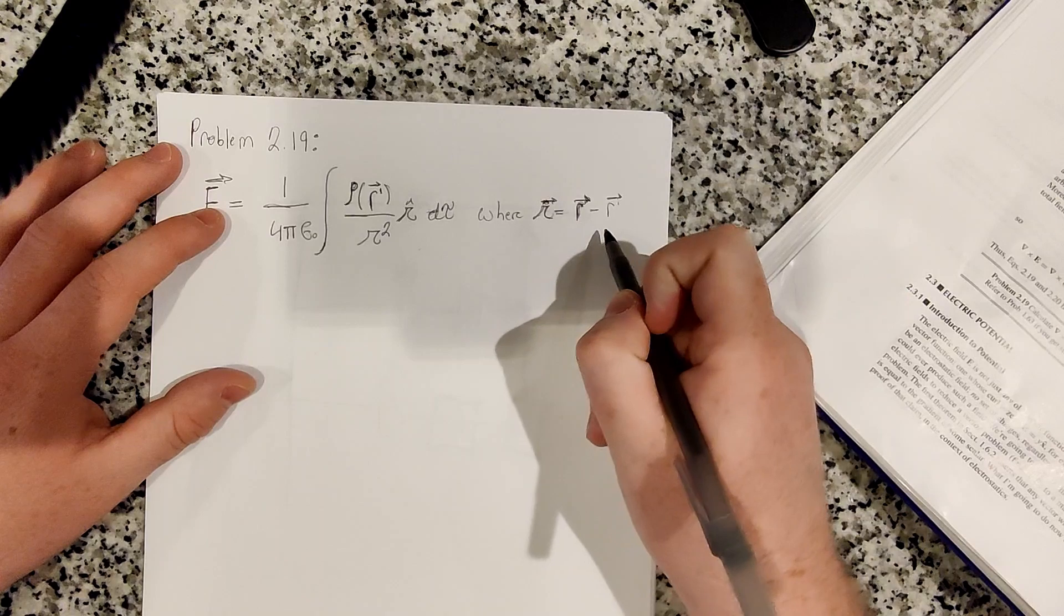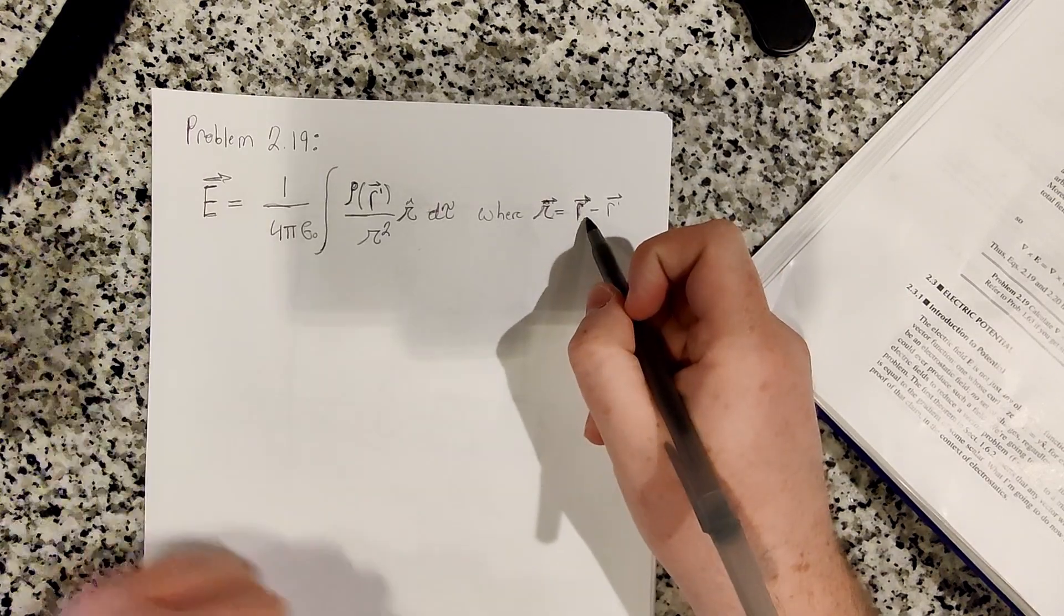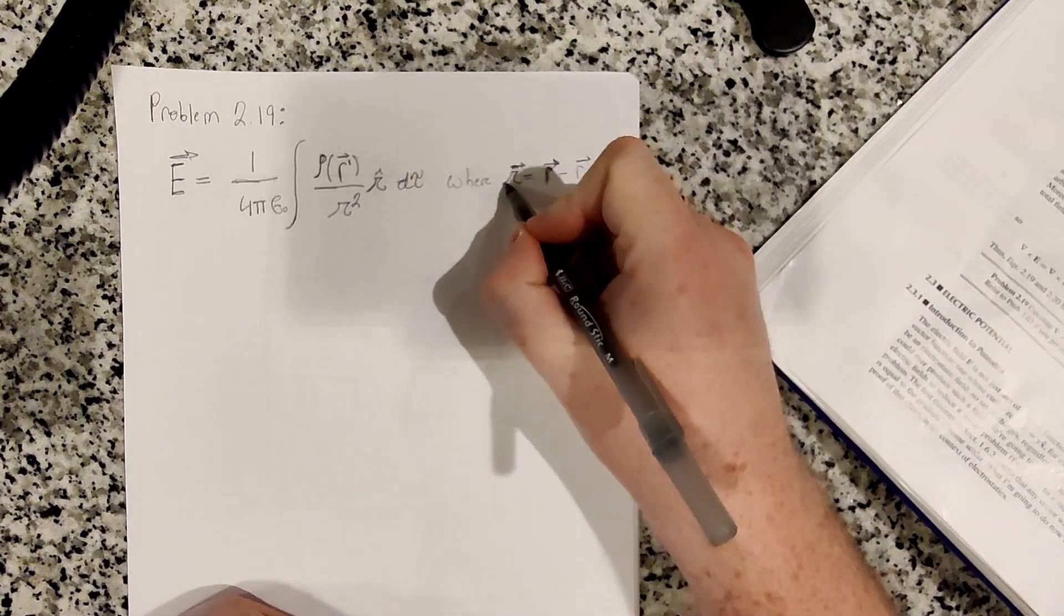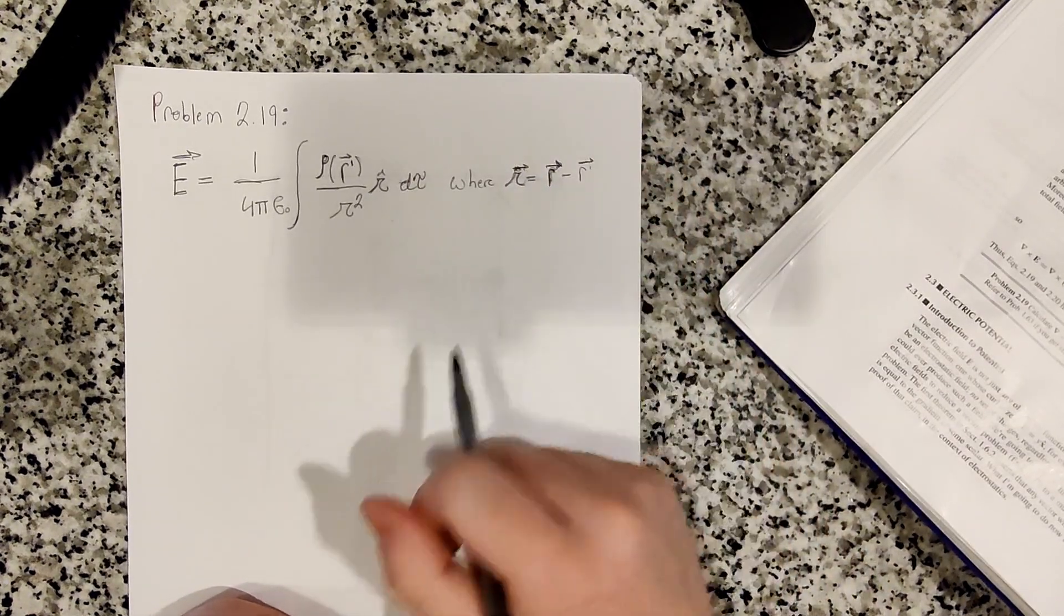And the vector r is a vector to the field point, so a point in space where a field is produced. And script r is the vector r minus r prime.